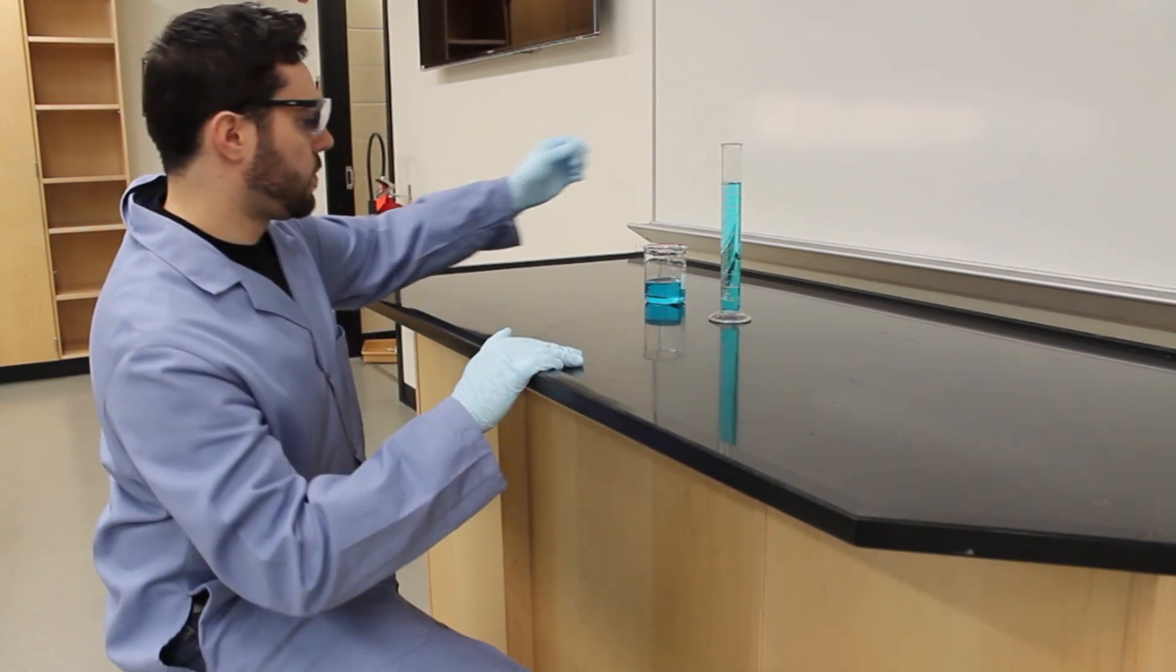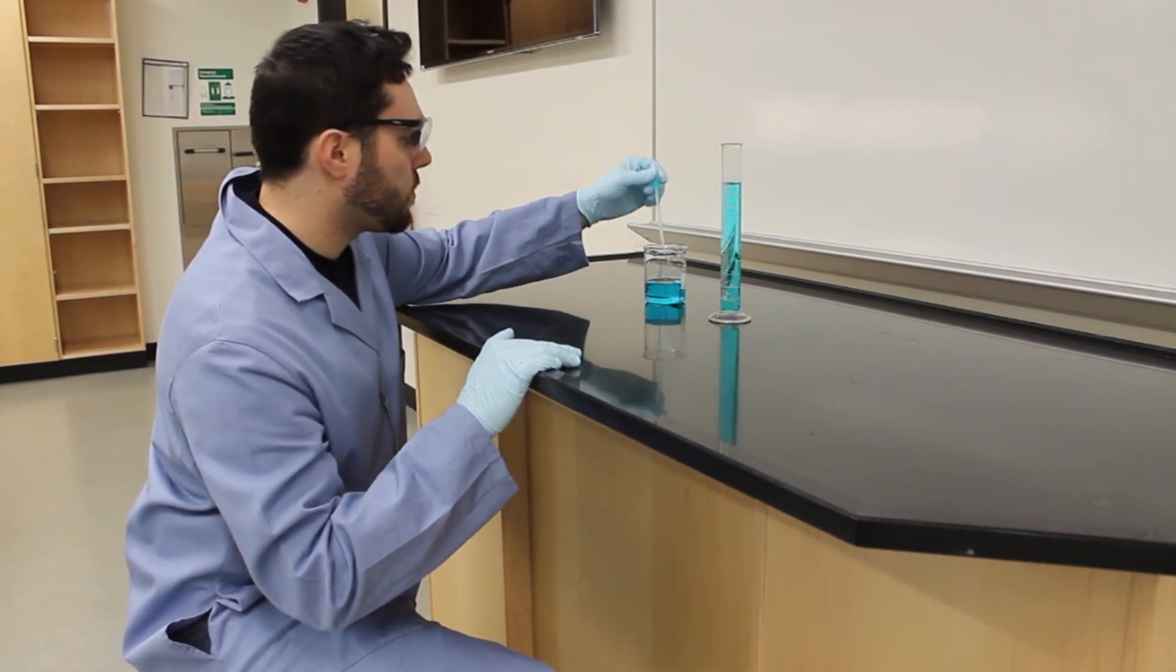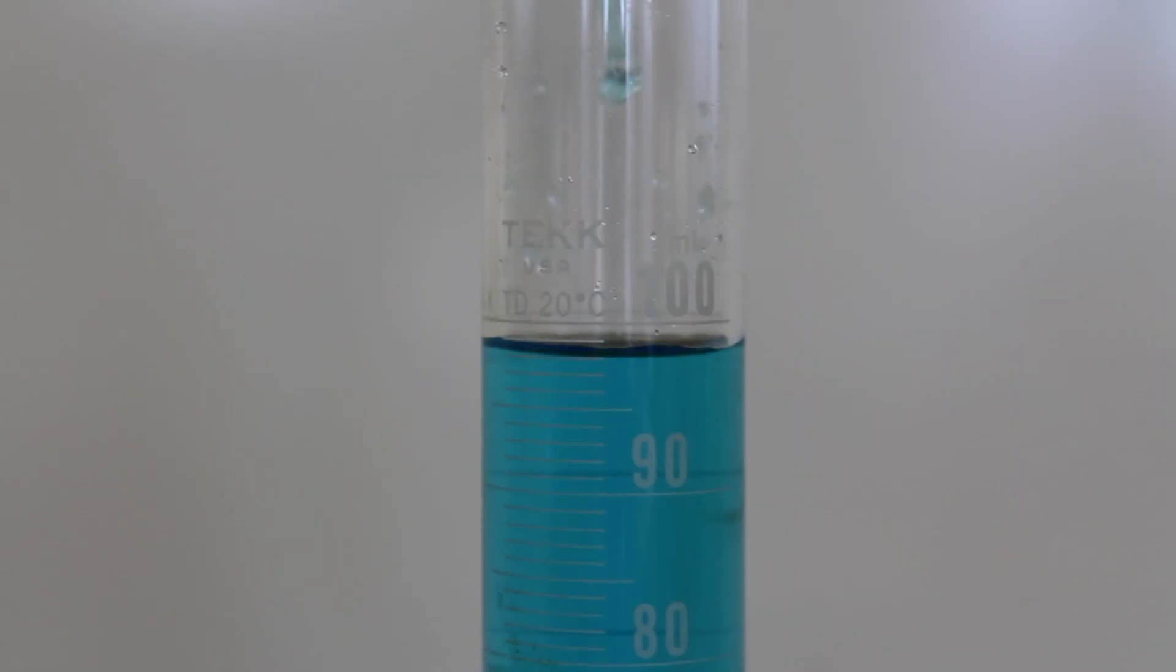Make sure to look at the bottom of the meniscus. To get the volume right where you want it, use a dropper to add small amounts of your substance. Here we are going for an even 100.0 milliliters.